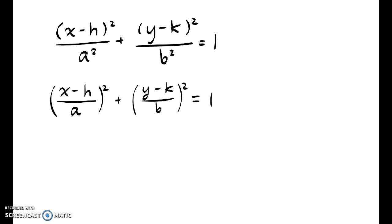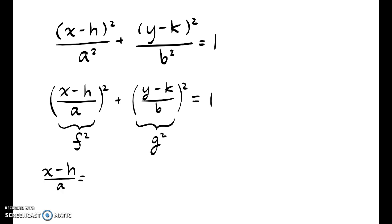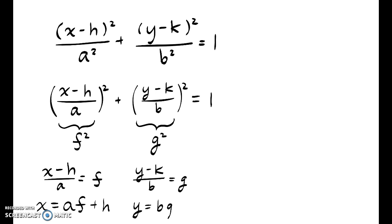Now we want to express things a little differently. Let's call x minus h over a as f, so this is f squared, and let's call y minus k over b as g, so this is g squared. Then x minus h over a equals f, so x is equal to a times f plus h. The same thing goes for y: y minus k over b gives us g, so y equals b times g plus k.